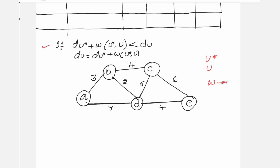W is the weight or the cost on the edge between these two vertices. If there is a vertex u* and another vertex u, and the cost on the edge is 4, then this 4 is equal to w. You need to see what is the distance to reach u*, and what is the distance to reach u.